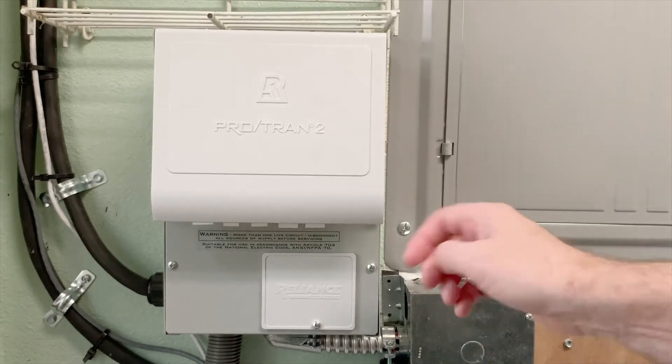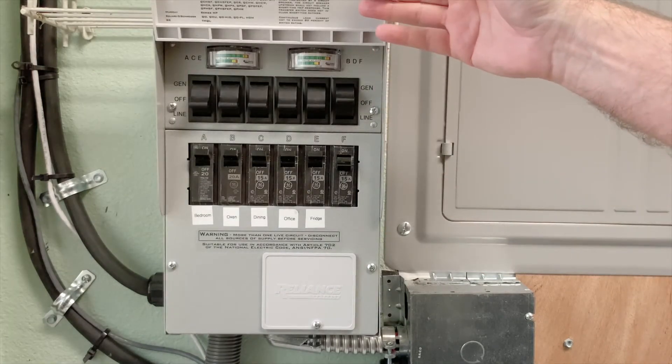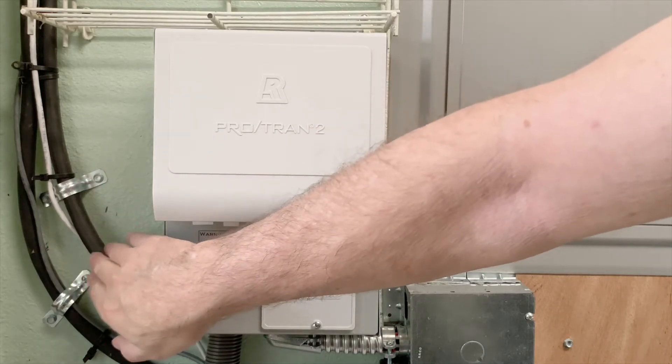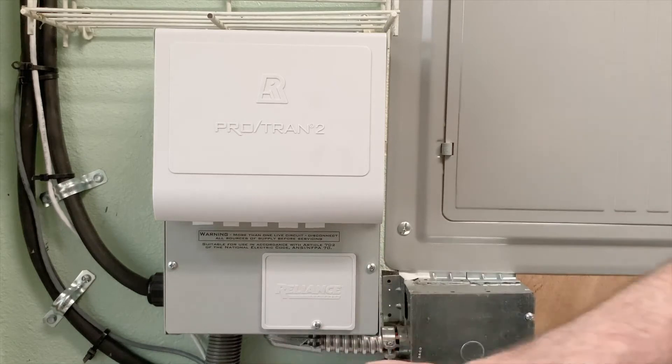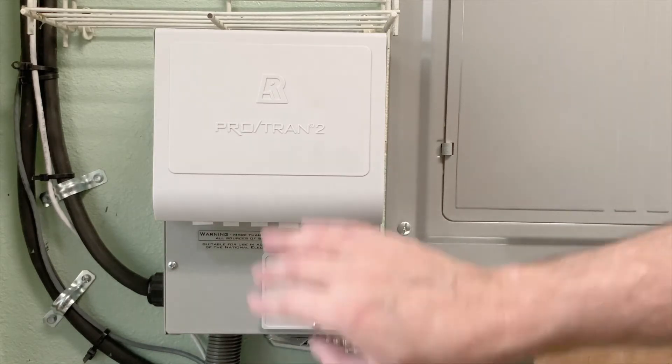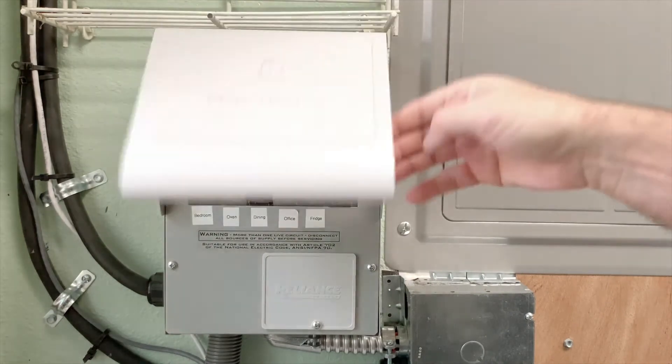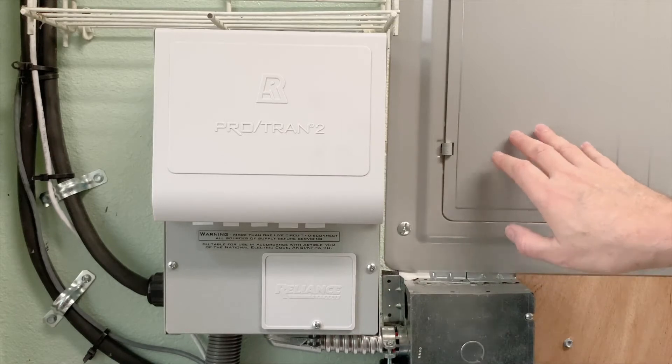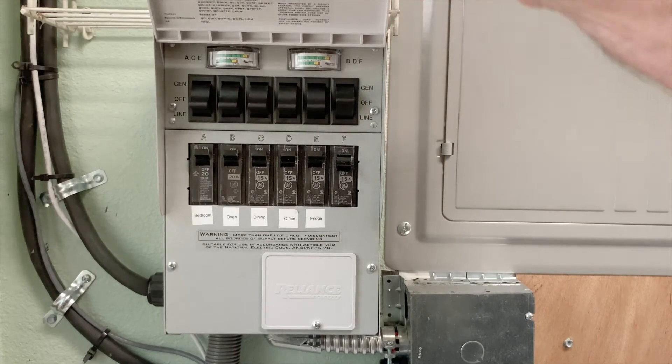This is the secret right here. This is the Reliance Pro-Tran 2. It's a manual transfer switch made to be used with generators, but it works perfectly fine with solar-powered inverters. This is the power coming from the inverter going inside, and I'll show you in a minute how this is all wired on the inside. Then after it goes through the breakers and switches, it will go through this conduit, a bunch of cables that come with it, and feed into your breaker panel, and I'll show you how all that is wired in a minute. But first, we'll talk about how it works.